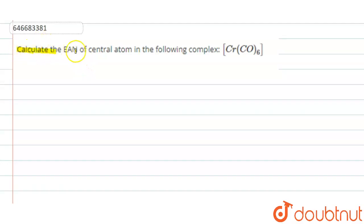Calculate the EAN of central atom of the following complex. We have hexacarbonyl group, so it is chromium hexacarbonyl group. First of all, we should understand what is EAN.